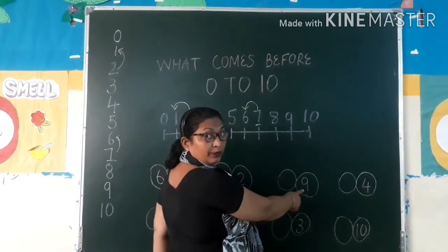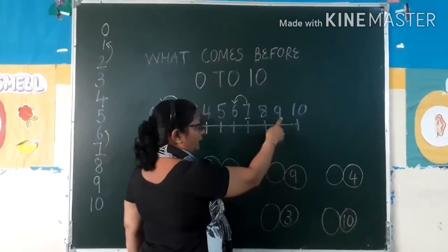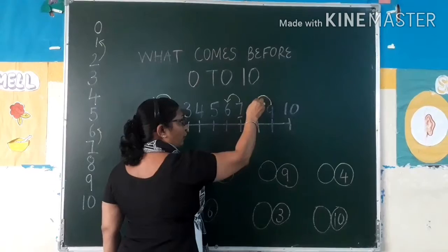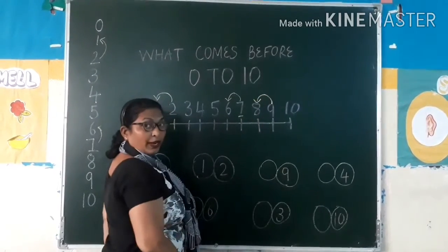Okay? What is this number? This is nine. Where is nine? Here. Here is nine. And what comes before nine? Before nine? Eight.